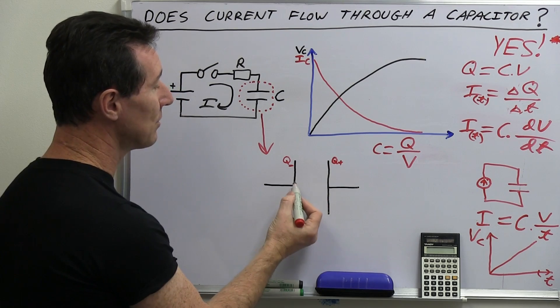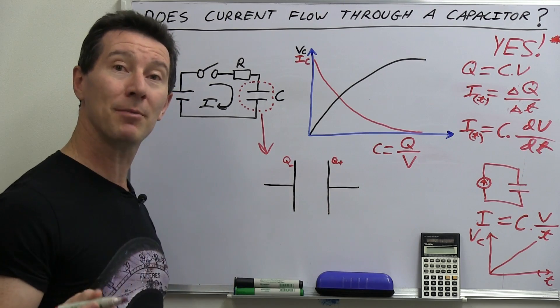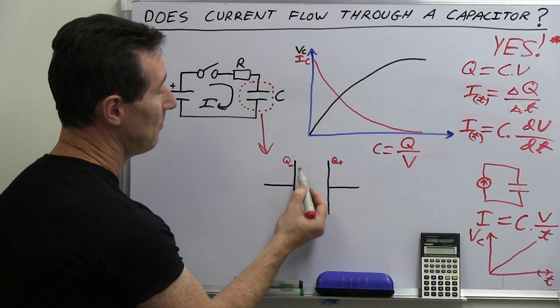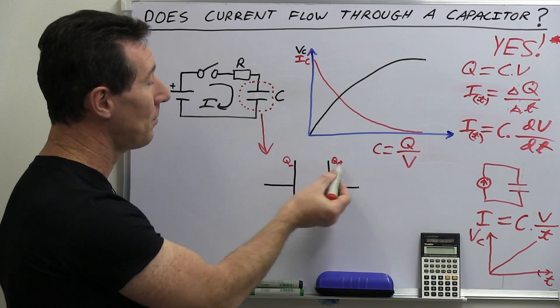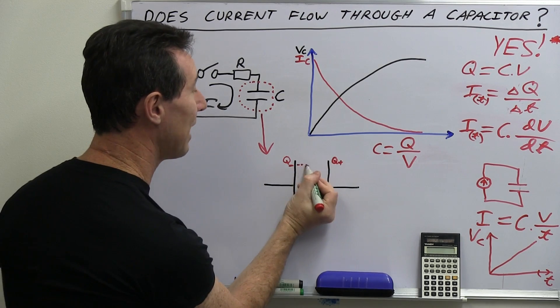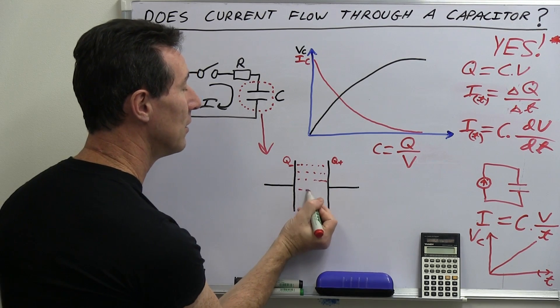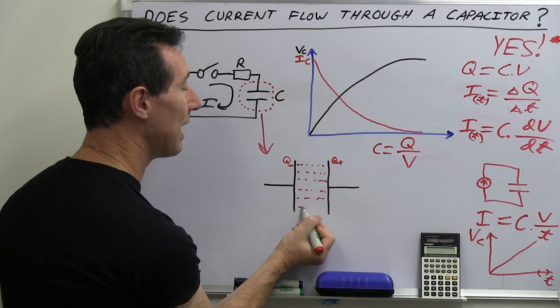And what that does is actually creates, when you charge up a capacitor, you're actually building up a charge on both of these plates. They're going to be equal and opposite charges between the two plates. And you're going to set up an electric field between the two plates.